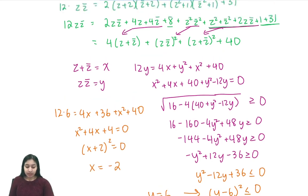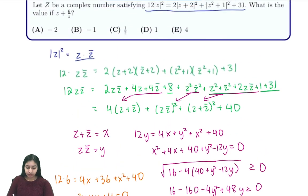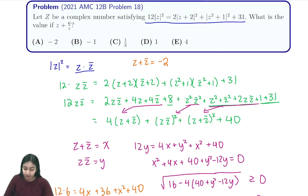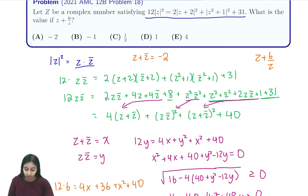So now we know that z plus z bar is negative 2, and we also must have that z plus 6 over z... Because we know that z z bar is equal to y which was 6, 6 over z is just equal to z bar. So this is equal to z plus z bar. And because we already found that z plus z bar is negative 2, our answer is just negative 2, which is A.